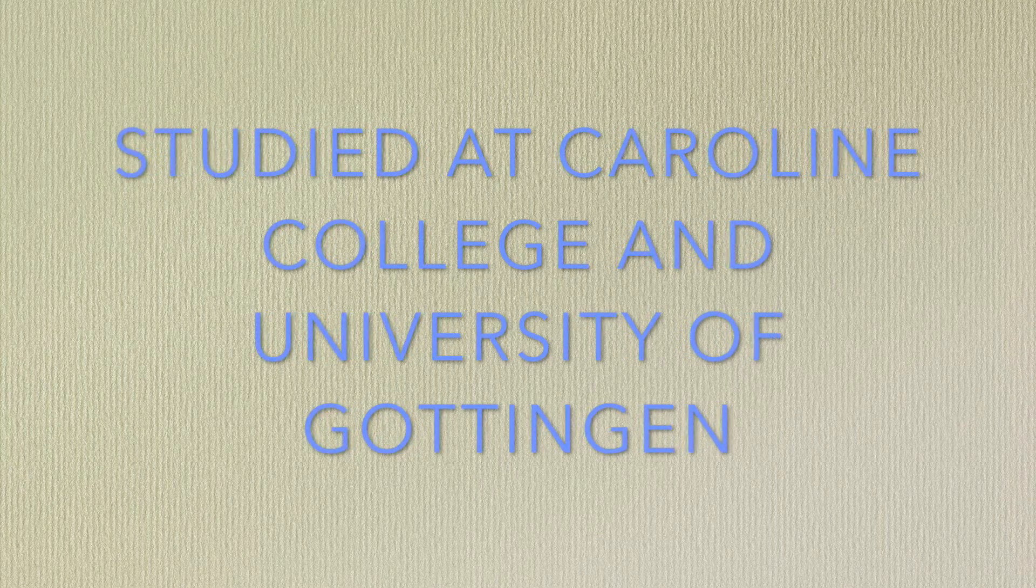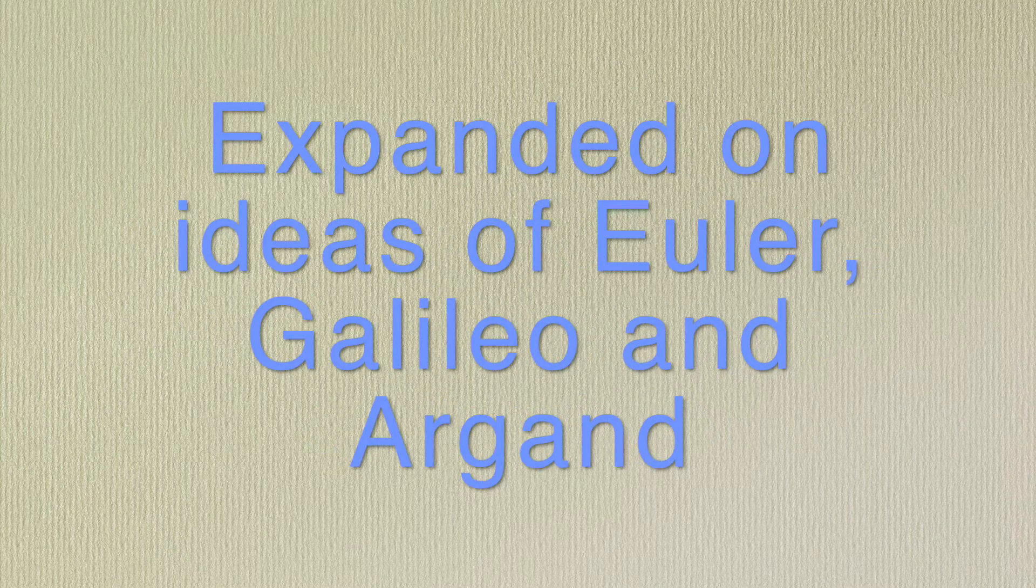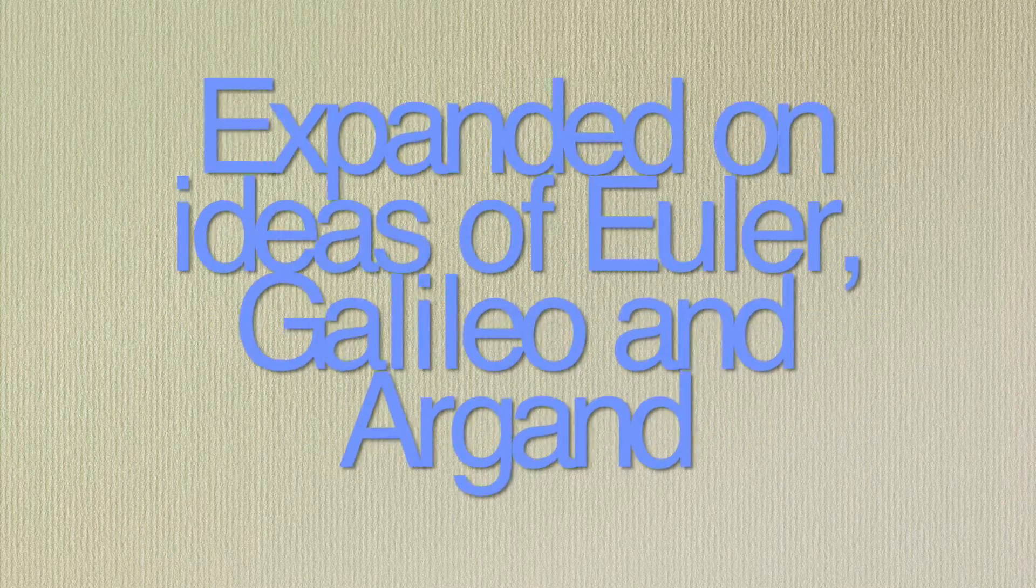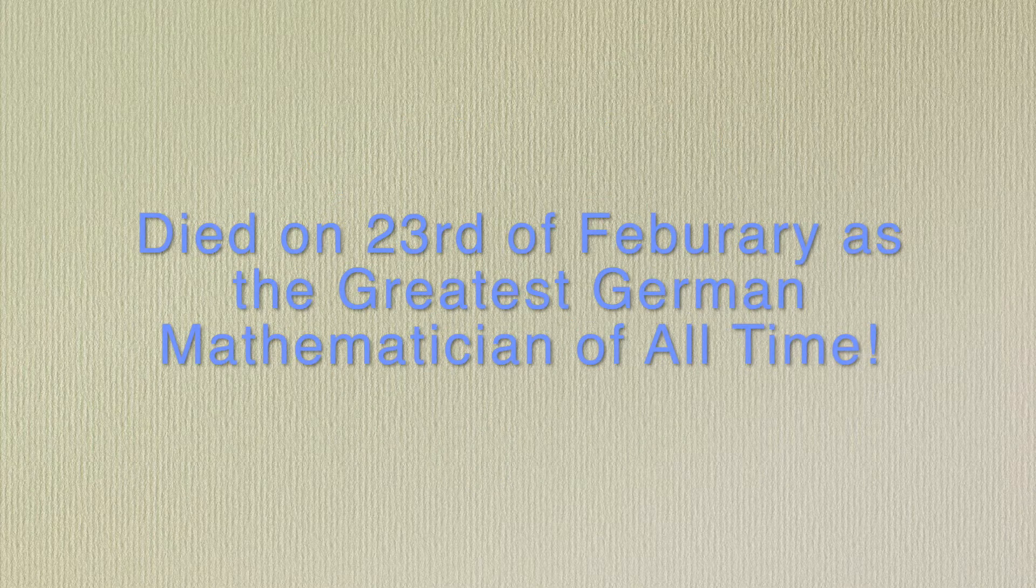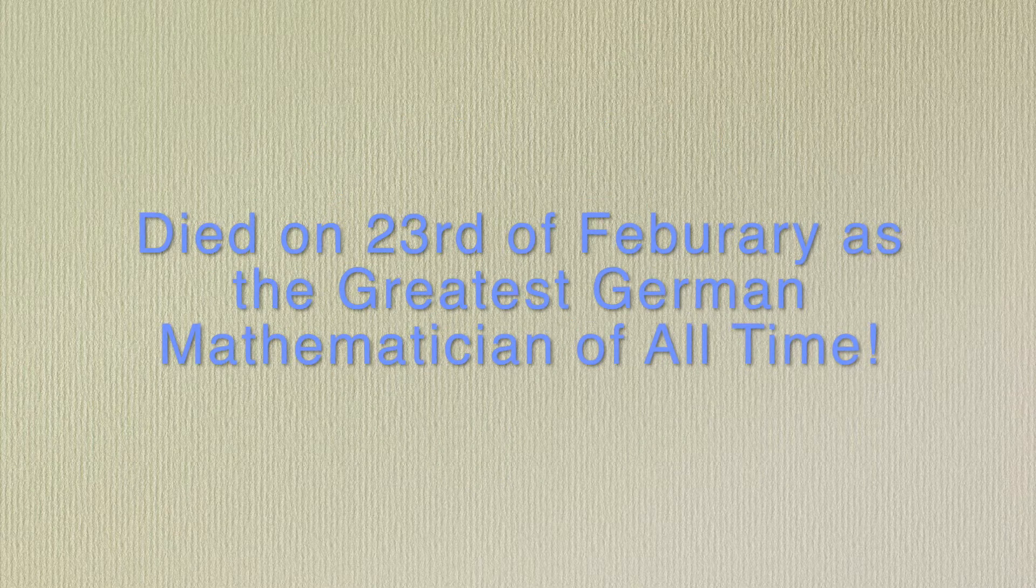Studying at Carolyn College and the University of Göttingen, he worked with many other academics including astronomers Zach, Olbers, Schumacher, and Bessel. On the 23rd of February 1855, Gauss died in Göttingen at an age of 77.